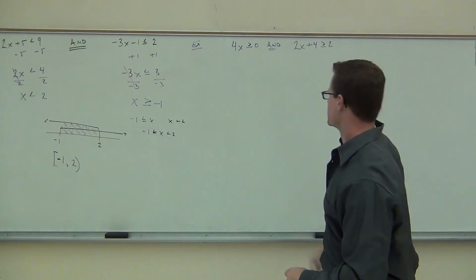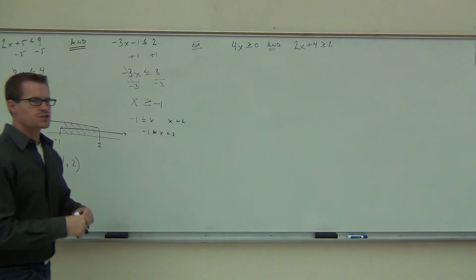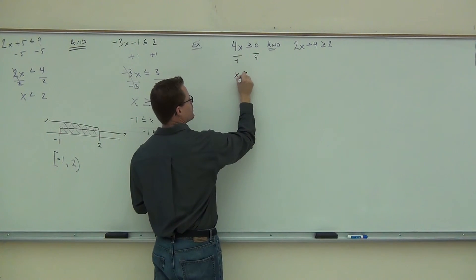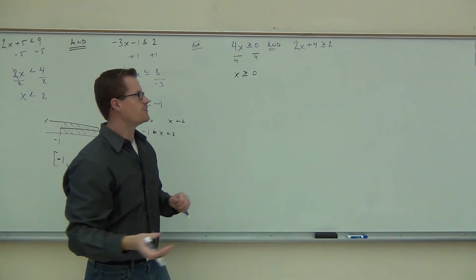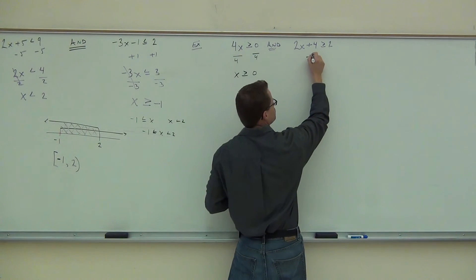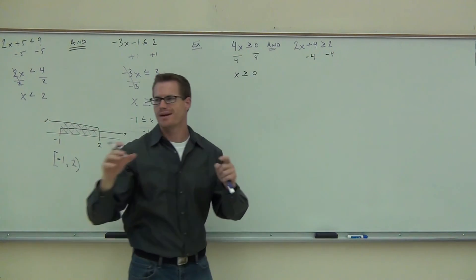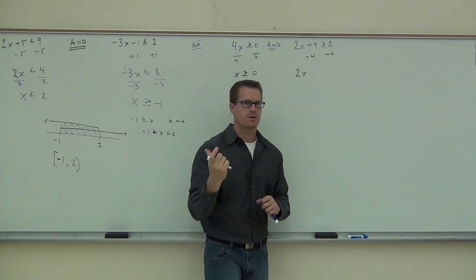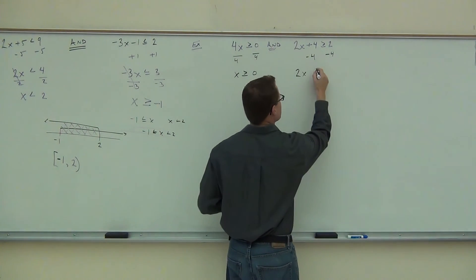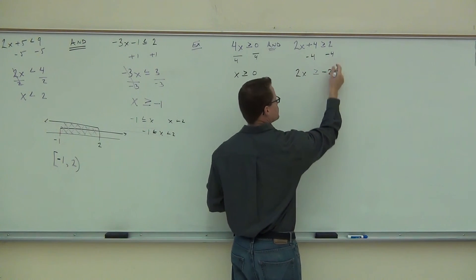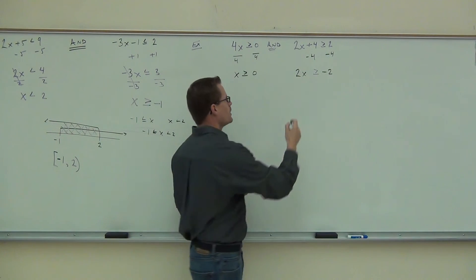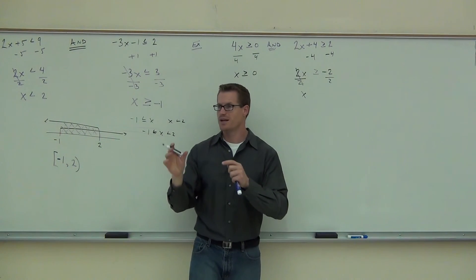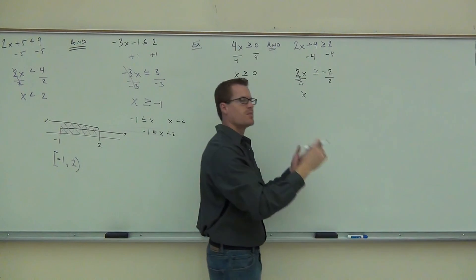Now let's go talk about this one — what do you do with AND inequalities? Let's solve both at the same time. If we divide by 4 in this case, we get x is greater than or equal to 0. I don't flip anything around — I did not divide by a negative. On the next one, we subtract 4, getting 2x is less than or equal to negative 2. Do I flip the sign? No — I'm subtracting 4, not dividing by a negative. Then we divide by 2, getting x is less than or equal to negative 1. Still no flip — I'm dividing a negative by a positive, not dividing by a negative.